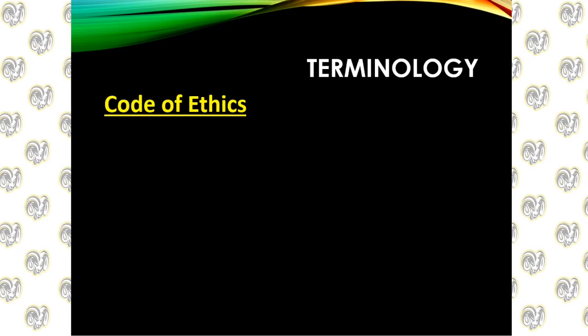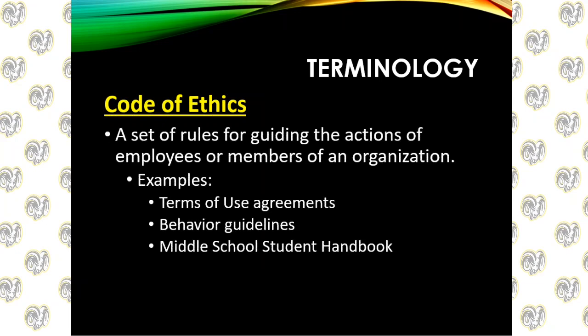A code of ethics is a set of rules or guidelines about how members of an organization or employees of a business should act. For example, when you download an app and it comes up with a terms of use or terms of service agreement, that's a code of ethics — it spells out your rights, responsibilities, how you should use the app, and your recourse if you have a bad experience.